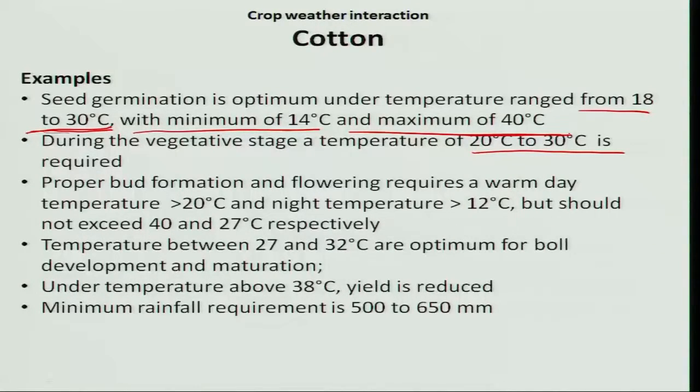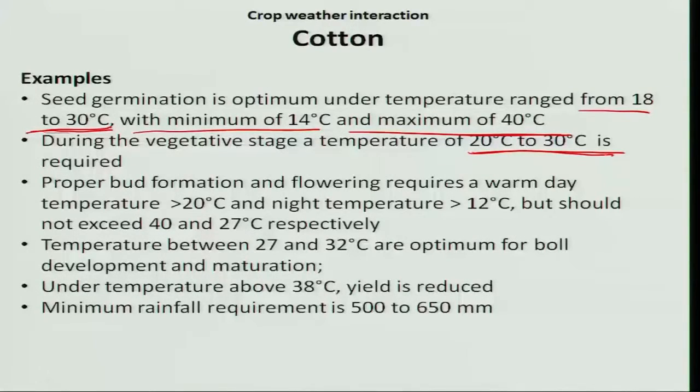The cotton seed consists of 8 times more oil and 5 times more protein than the maize seed. It is covered with a thick cuticle, so it requires more moisture for imbibition, as well as more oxygen to catalyze the storage components into a labile form. Therefore, optimum temperature is also very important for seed germination, which is around 20 to 30 degree Celsius.